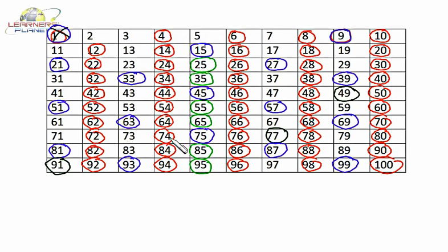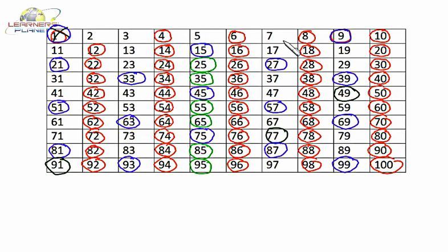We did this activity by finding out the multiples of 2, 3, 5 and 7. We found out the multiples of 2, then the multiples of 3, then the multiples of 5 and then 7. Since all the circled numbers are multiples of either 2 or 3 or 5 or 7, hence all of them are composite numbers. So except the non-circled numbers, every number is a composite number.